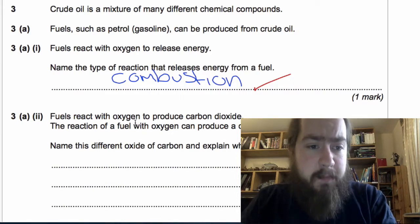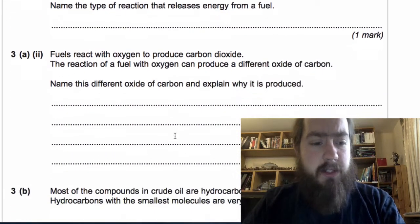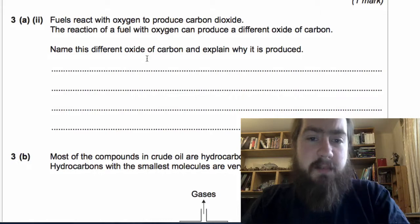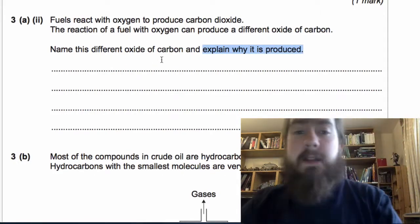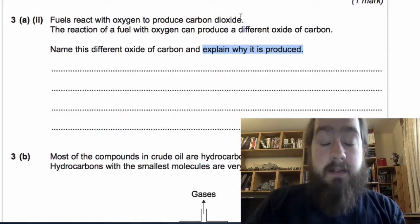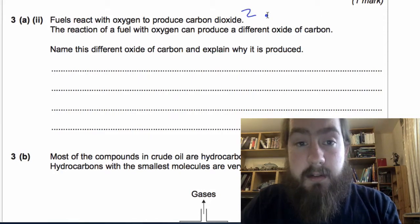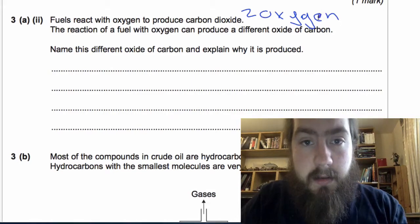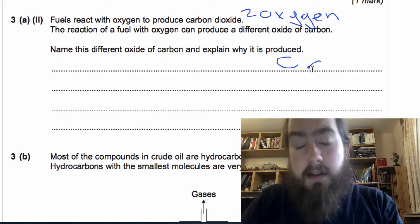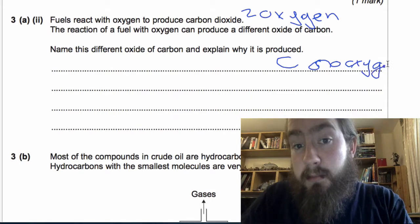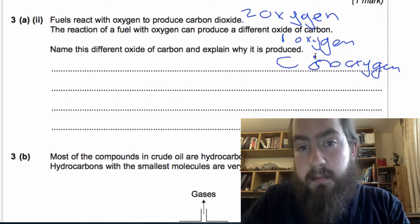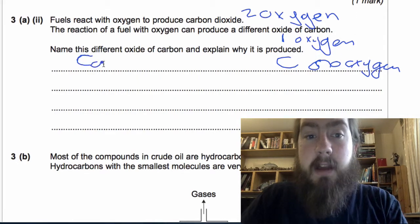Fuels react with oxygen to produce carbon dioxide. The reaction of a fuel with oxygen can produce a different oxide of carbon. Name this different oxide of carbon and explain why it is produced. Now this oxide of carbon is being produced because there's not enough oxygen. When you react something with oxygen, if there's lots of oxygen it will produce carbon dioxide which has got two oxygens for every carbon. If there's not enough oxygen at all it will produce just carbon which has got no oxygen for every carbon. The one in the middle has got one oxygen and that's going to be our carbon monoxide.